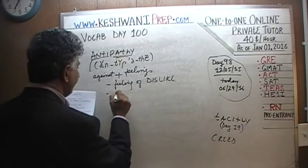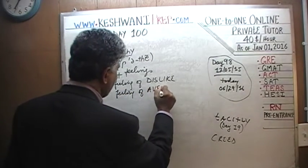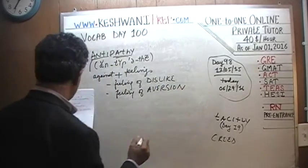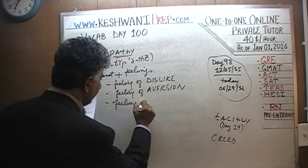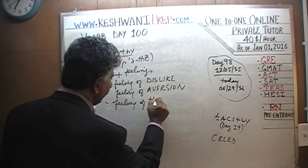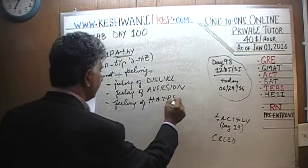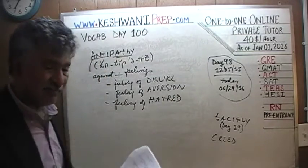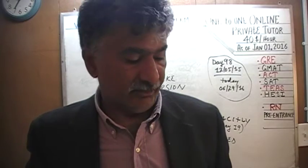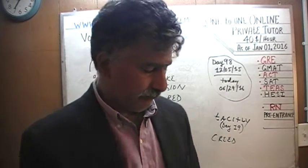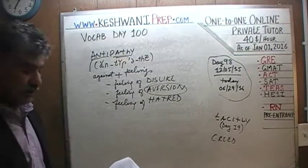Antipathy is a feeling of aversion, or even hatred. If you hate something or dislike something strongly, you say 'I have antipathy towards it.' The word aversion is of course a synonym of antipathy.